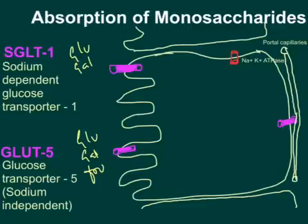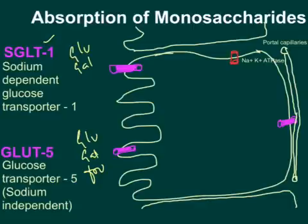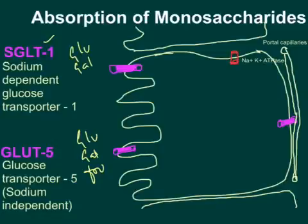One such transporter is SGLT1 — the sodium-dependent glucose transporter 1. It is called SGLT1 because there is another transporter, SGLT2, present in renal tubular cells for reabsorption of glucose from the renal tubular lumen. SGLT1 is located on the brush border epithelium of the duodenum and jejunum, and participates in sodium-dependent absorption of glucose and galactose.